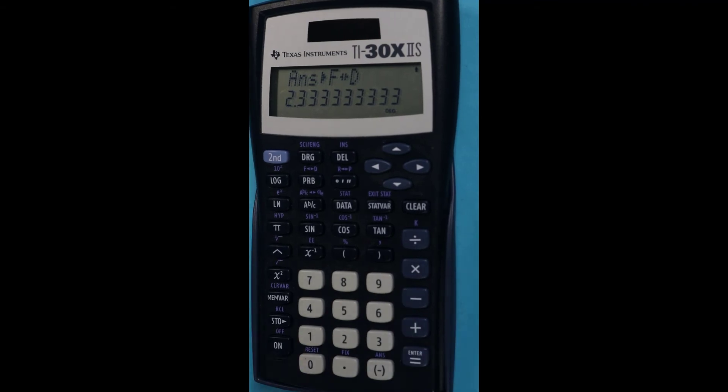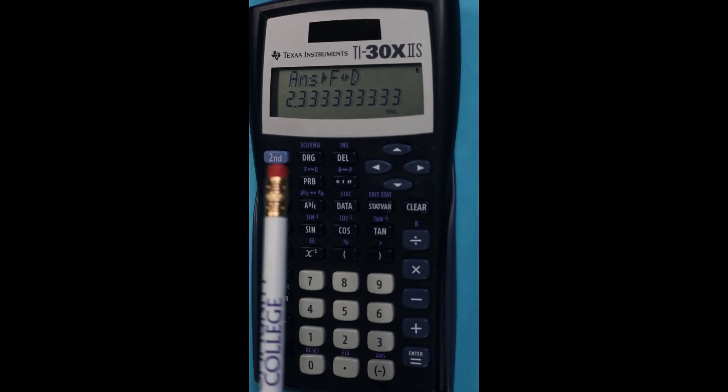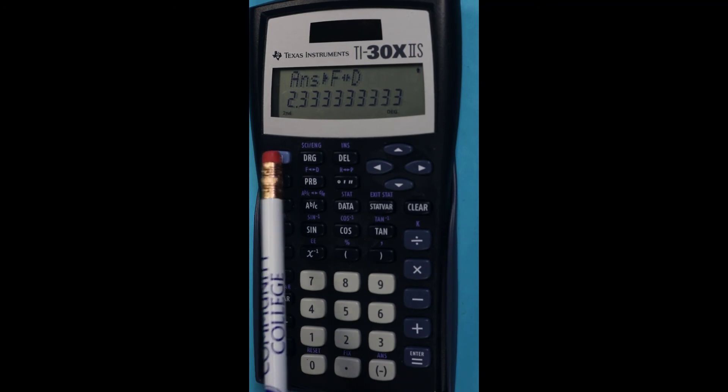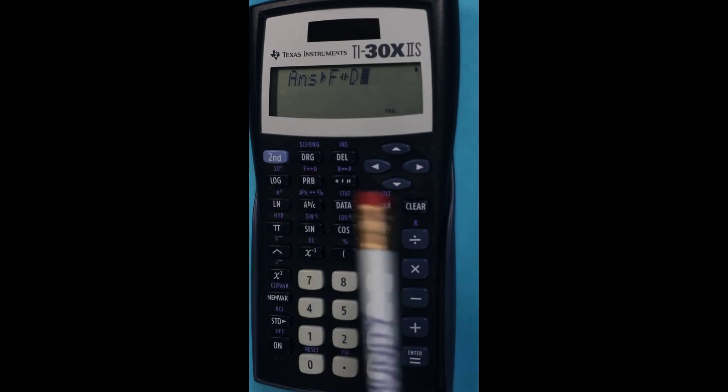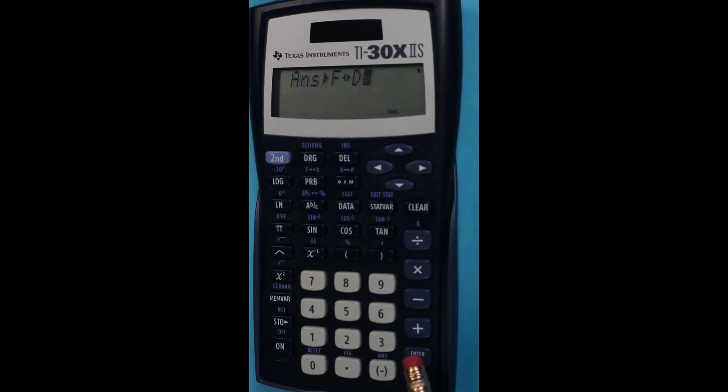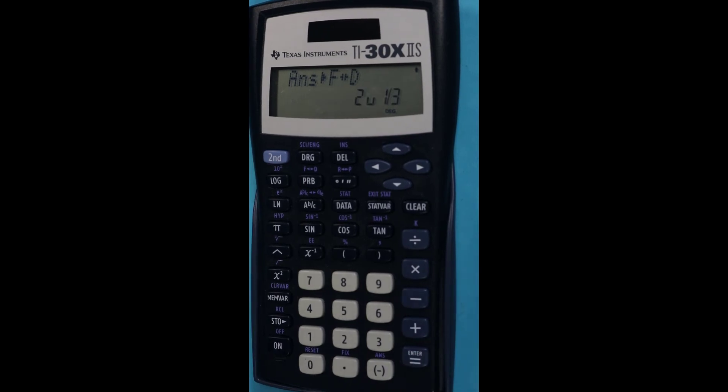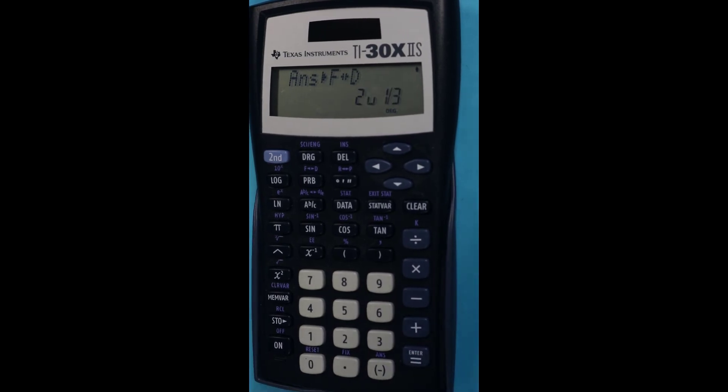And that's going to convert us into decimal form, which is 2 with a repeating 3. And then if I want to go backwards to fraction form, I do the same process: second F to D, D to F, and then press enter. And it's going to take us right back to the mixed number form of the fraction.